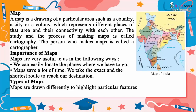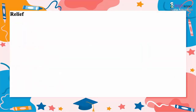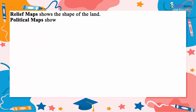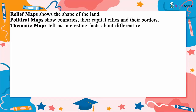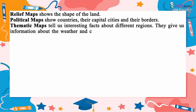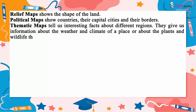Types of maps. Maps are drawn differently to highlight particular features of a place. Relief maps show the shape of the land. Political maps show countries, their capital cities and their borders. Thematic maps tell us interesting facts about different regions. They give us information about the weather and climate of a place, or about the plants and wildlife that grow and live in a place.